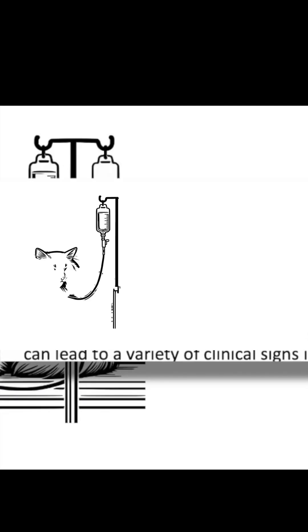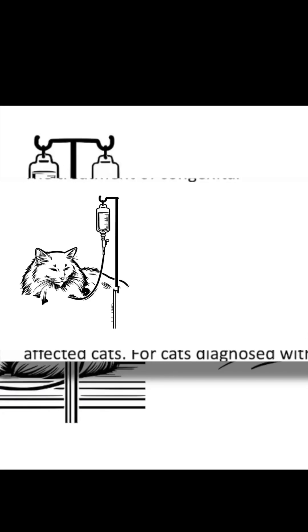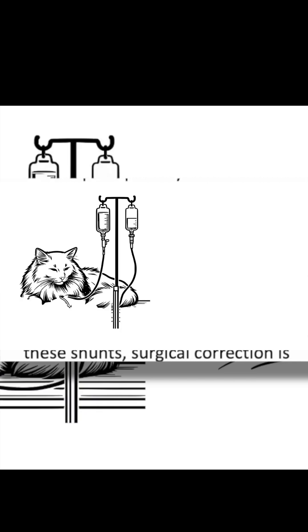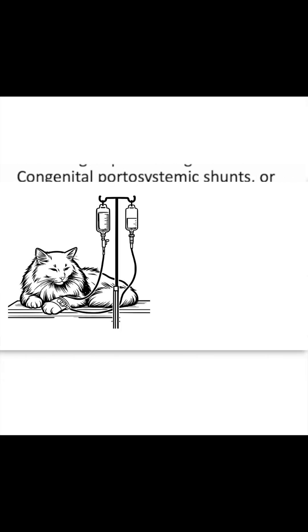Congenital portosystemic shunts, or shunts, are abnormal blood vessels that bypass the liver, preventing essential nutrients and waste products from being processed correctly. This can lead to a variety of clinical signs in affected cats.